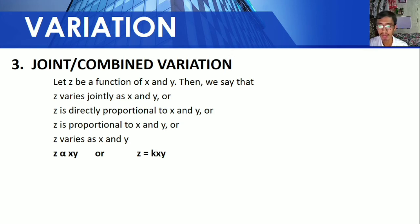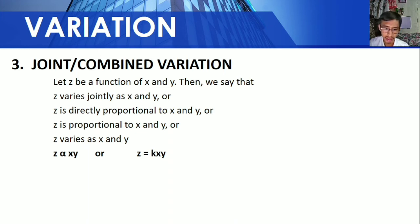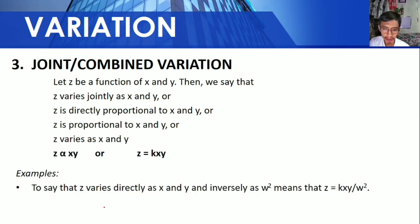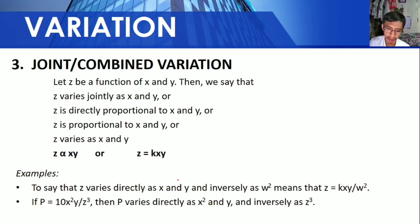Next is joint or combined variation. Let z be a function of x and y — we say z varies jointly as x and y, or z is directly proportional to x and y. For example, to say z varies directly as x and y and inversely as w squared means z is equal to kxy over w squared. And if p is equal to 10x squared times y over z cubed, then p varies directly as x squared and y, and inversely as z cubed.